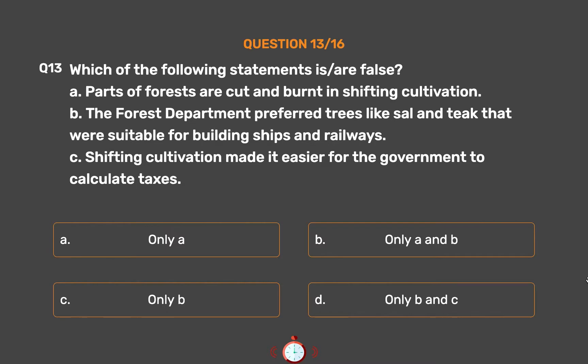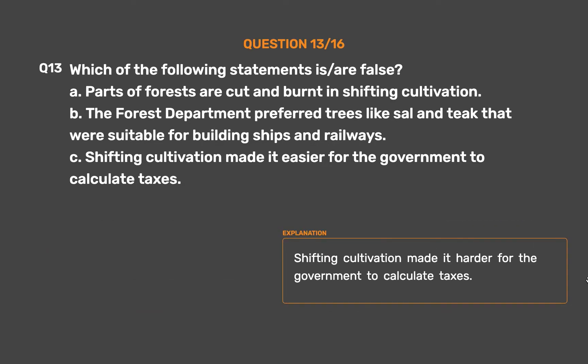The correct answer is Option B, Only A and B. Shifting cultivation actually made it harder, not easier, for the government to calculate taxes.